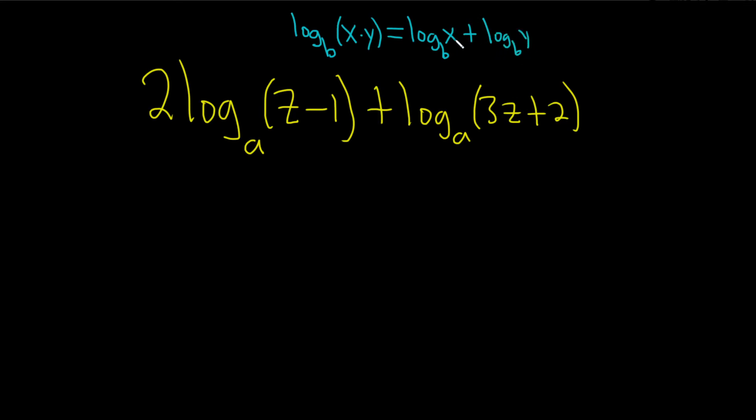So, whenever you have a plus and you have two logs, you can just write a single log and multiply what's inside. The thing is, there's a 2 here, so we have to first get rid of this 2. To do that, we can use what's called the power rule.